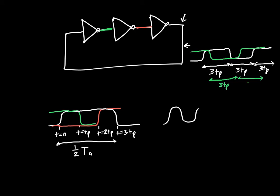So at each inverter, I've somewhat exaggerated the waveform. It's not actually going to end up being this flat, but you get the basic idea. So the period, the overall period of oscillation is 6 times the propagation time. Or the frequency of oscillation is 1 over 6 times the propagation time.